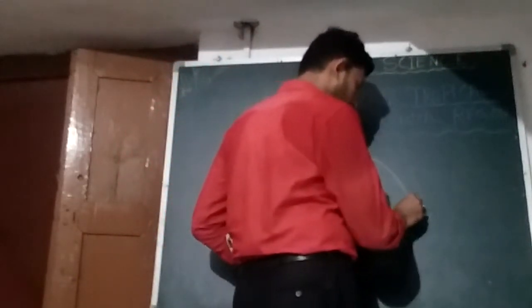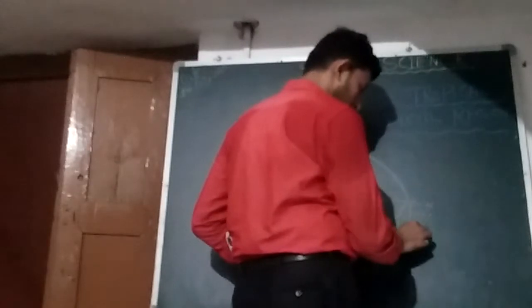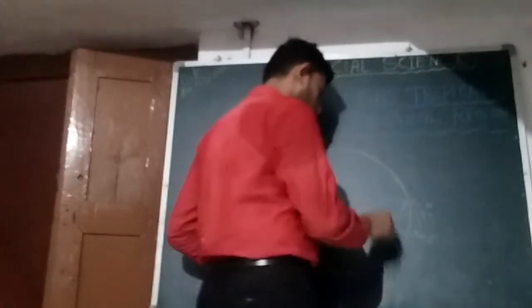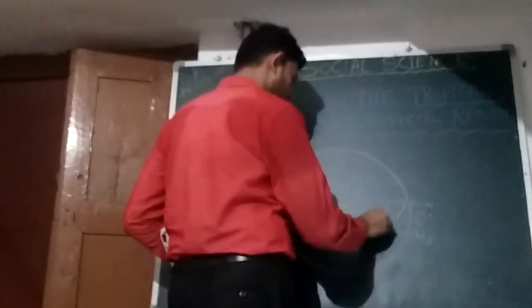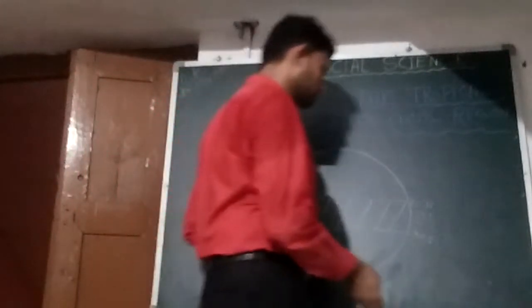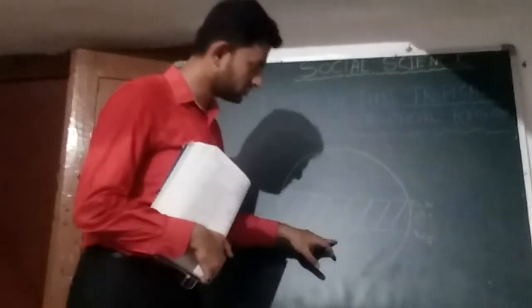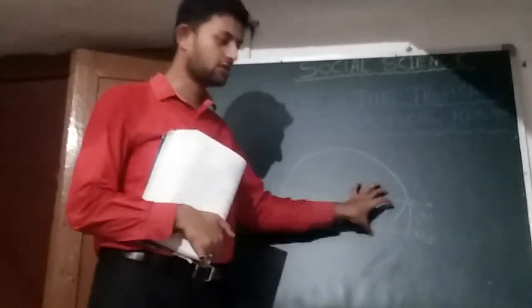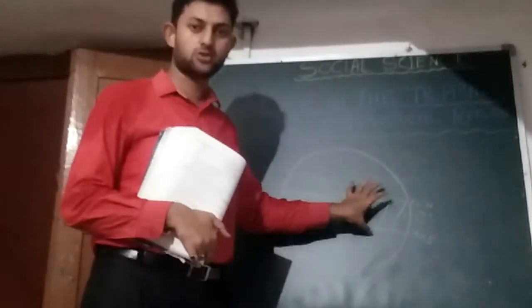The equator extends 20 degrees north and 20 degrees south latitude, covering both the northern hemisphere and the southern hemisphere. The area from 0 degrees to 20 degrees north in the northern hemisphere and 0 degrees to 20 degrees south in the southern hemisphere is called the tropical zone.